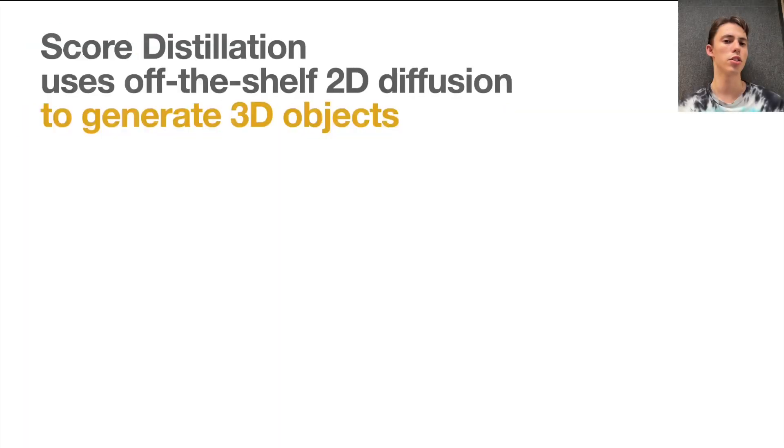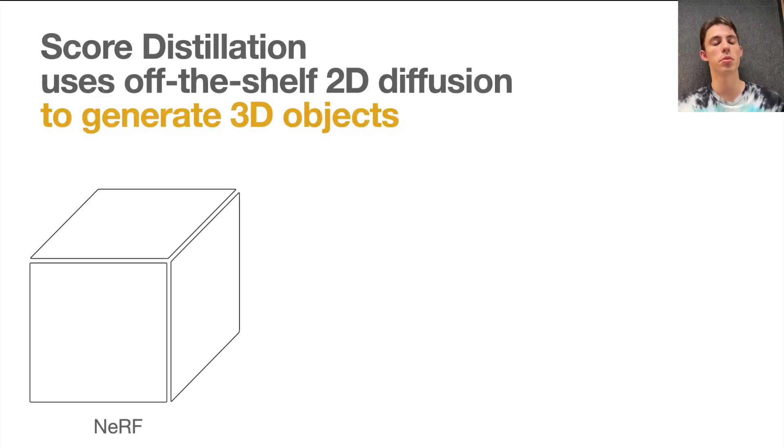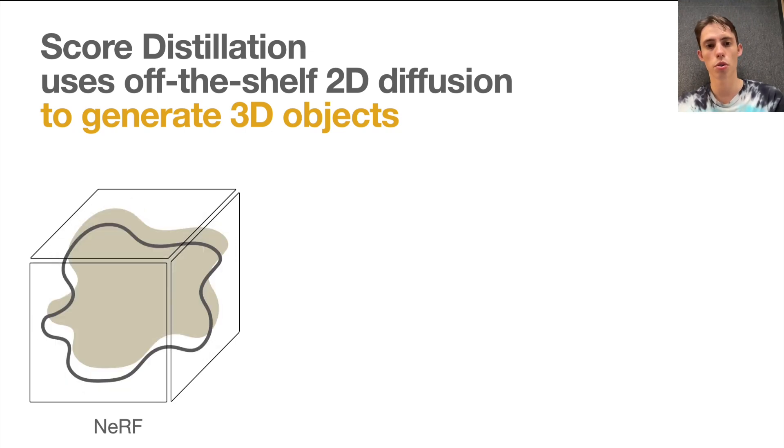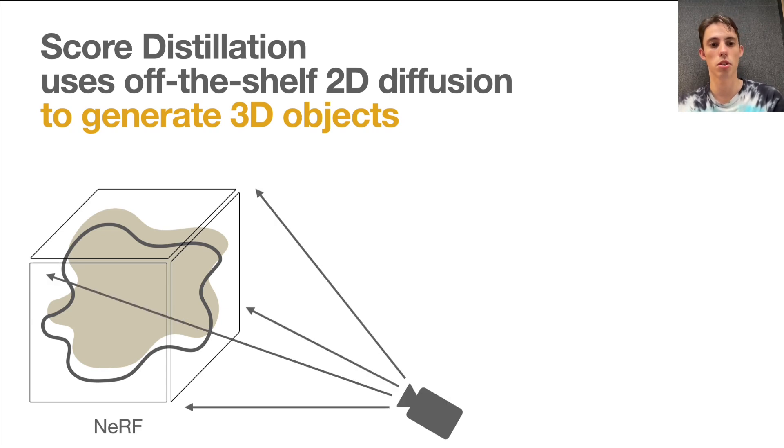So how does SCORE distillation work? First let's take a parametric and differentiable 3D representation, for instance a NeRF. It is initialized to a neutral shape, such as sphere or a blob. On each step of SCORE distillation, we randomly sample a camera and then we render the shape from this camera position.